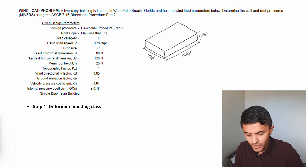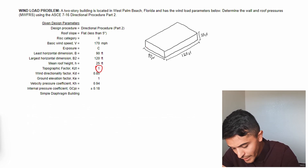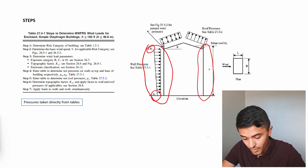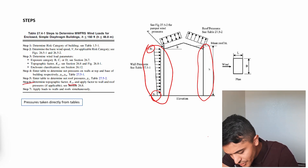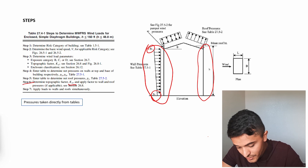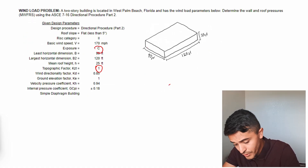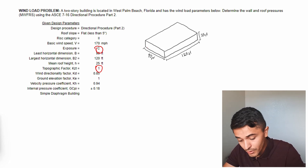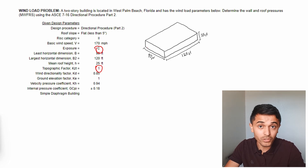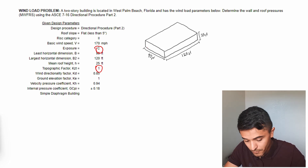One additional note: our topographic factor K_zt is 1, so we don't need to adjust the values we get from the tables. Step six tells us to determine the topographic factor and apply it to wall and roof pressures if applicable. There's also another factor within the roof tables to adjust roof pressures if you are not exposure C. Because we are exposure C, I'm leaving that step out. This is specific to our building — if using these calculations for another building, make sure to multiply wall and roof pressures by the appropriate adjustment factors.